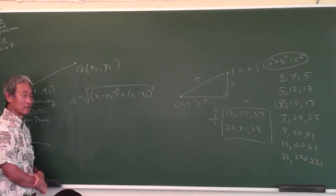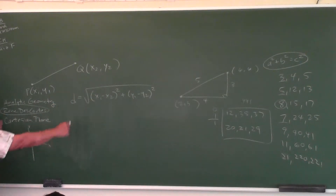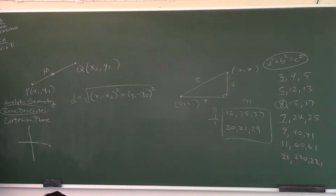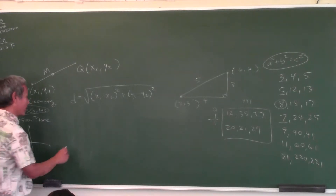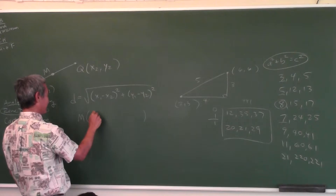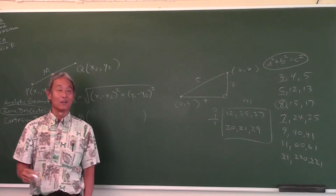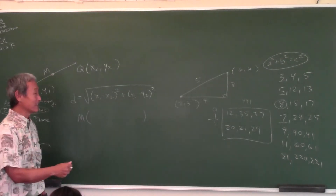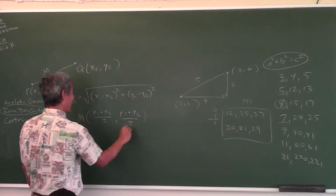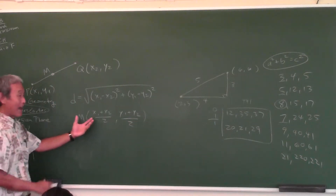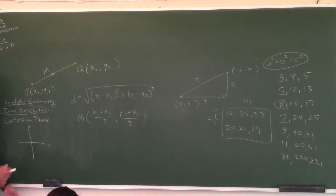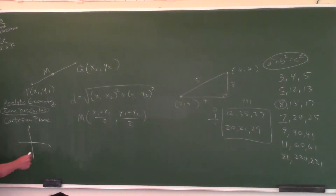If I have two points, can I find the point halfway between them? Yes — we learned this in geometry. This is called the midpoint formula. The coordinates of the point halfway between two other points in the Cartesian plane: you just average the x-coordinates and average the y-coordinates. That makes perfect sense — if you want something halfway between two things, you take the average.